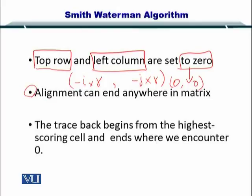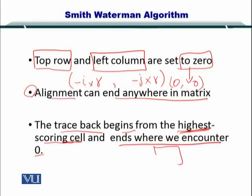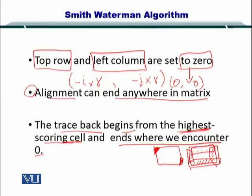Thirdly, the alignment can end anywhere in the matrix. The traceback begins from the highest-scoring cell and ends where we encounter a zero. In the Needleman-Wunsch algorithm, we started from the bottom right and ended at the top left. However, in the Smith-Waterman algorithm, we start from the highest-scoring cell anywhere in the matrix and end at any position where the score is zero. Please remember this when computing the Smith-Waterman algorithm.